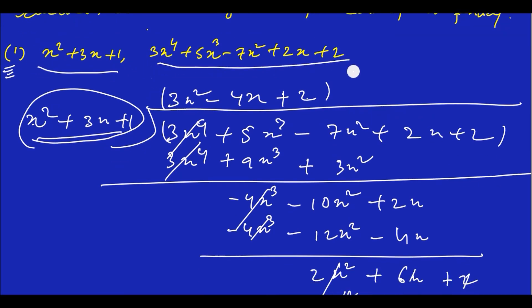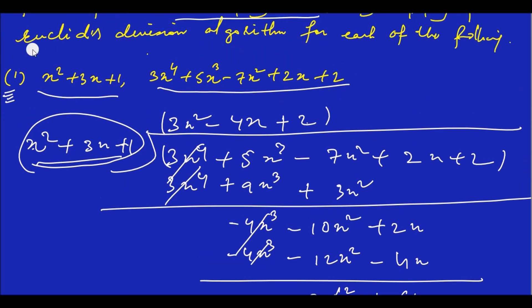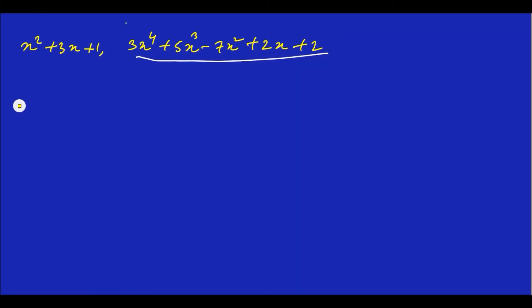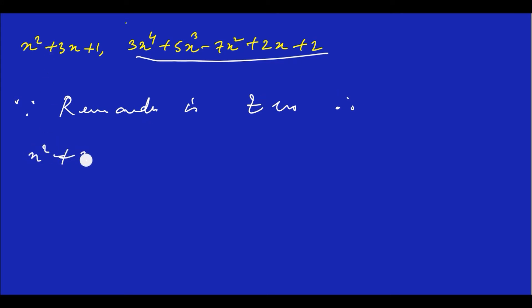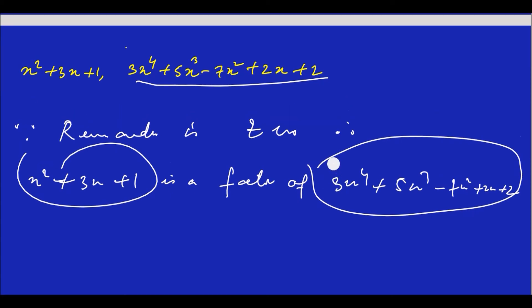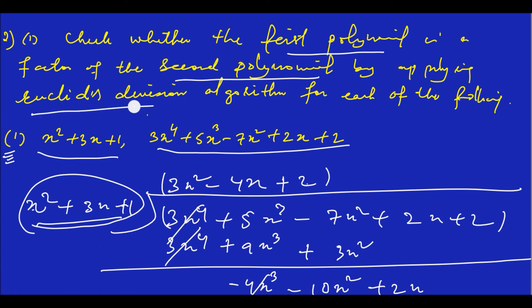Since the remainder is 0, this polynomial is a factor. Therefore x² + 3x + 1 is a factor of 3x⁴ + 5x³ − 7x² + 2x + 2. Euclid's division algorithm is verified.